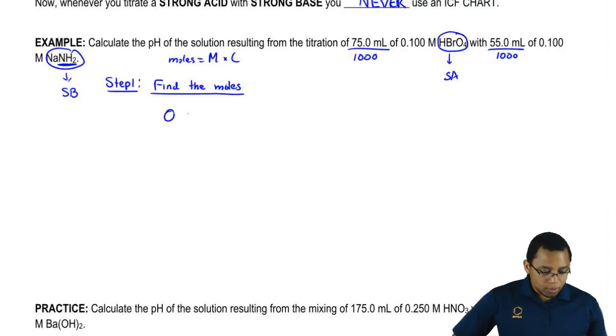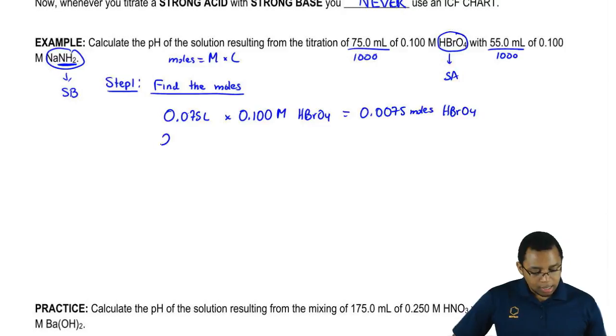So when we do this, we're going to say 0.075 liters times 0.100 molar HBrO4 equals 0.0075 moles of HBrO4. Then we do the same thing with the other one.